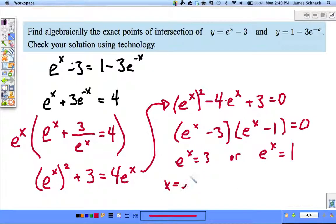So e^x = 3 or e^x = 1. Therefore x = ln(3) or x = ln(1). Here's a question: e to what power is 1? The answer is x = 0. So there are my x-coordinates.